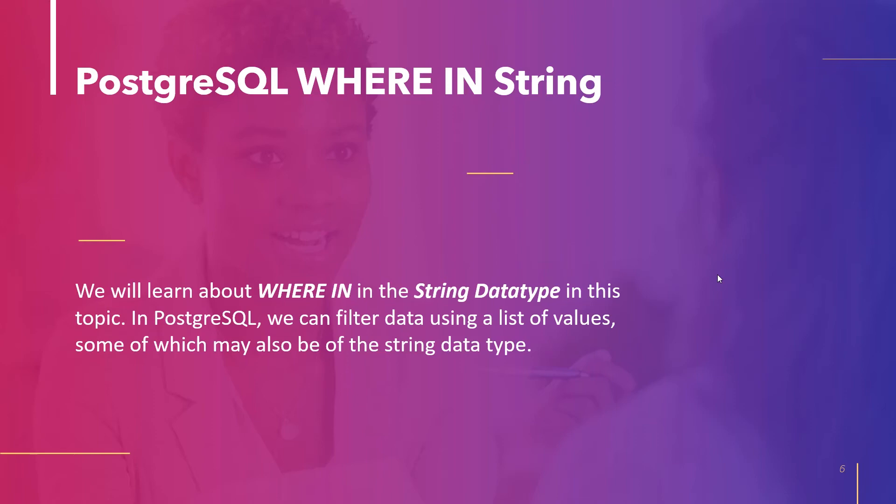The next topic is PostgreSQL WHERE IN String. We will learn about using the IN operator with string data type. We can use the IN operator in PostgreSQL to filter data according to a list of values which can be of string data type as well. Let's take an example and understand how to filter data based on string values in the IN operator.